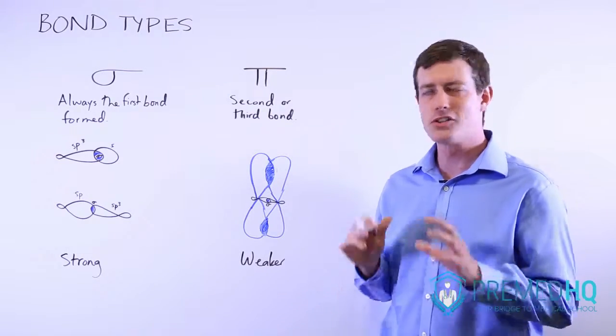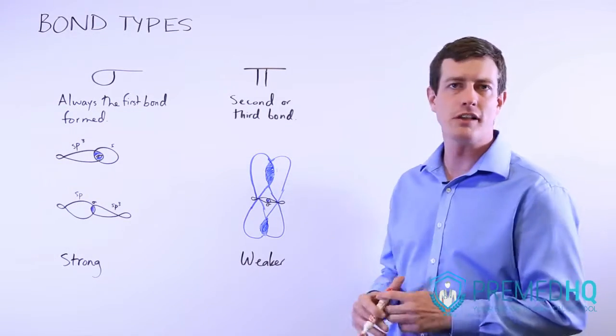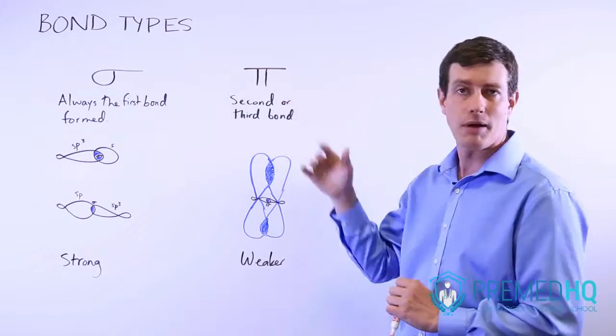There are two major types of covalent bonds to be aware of: the sigma bond and the pi bond.